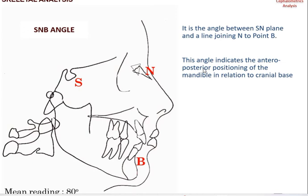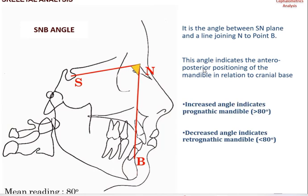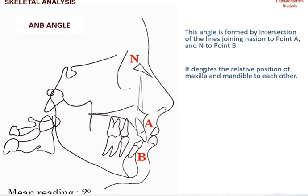The second angle is the SNB angle, formed between the SN plane and a line joining nasion and point B. Since point B is located on the mandible, this indicates the anterior-posterior position of the mandible in relation to the cranial base. An angle beyond 80 degrees indicates a prognathic mandible; if it is below 80 degrees, it indicates a retrognathic mandible.